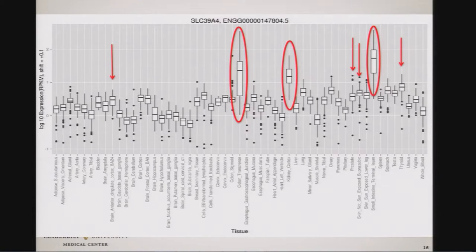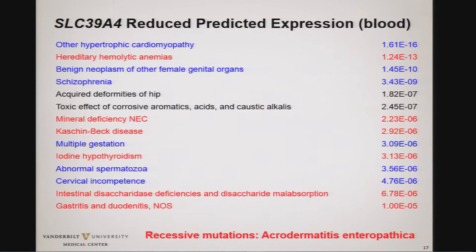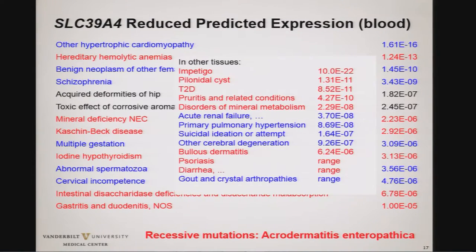The gene is highly expressed in colon, intestine, kidney, and brain. People with reduced predicted expression have bad outcomes: we see the mineral deficiency, things associated with zinc deficiencies. In blood we see gastritis and others, but across other tissues we get a bunch of skin conditions that are probably misdiagnosed — likely related to the same skin condition seen in the Mendelian disease. We also see acute renal failure, kidney disease, chronic kidney failure, kidney transplantation, primary pulmonary hypertension, and hypertrophic cardiomyopathy.